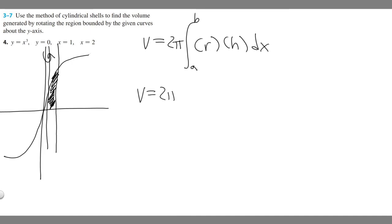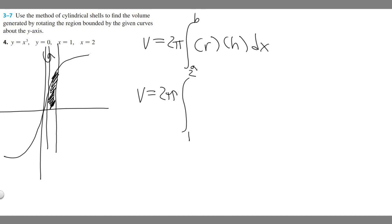These are going to equal two pi. What are a and b going to be? They're our upper and lower bounds. In this case they tell you x equals one and x equals two, which are going to be our upper and lower bounds — basically the x values that bound our region. Sometimes they'll give you both bounds, or sometimes you have to find where two functions intersect. But in this case they give us both: x equals one and x equals two.